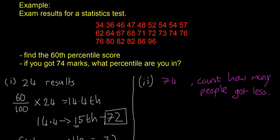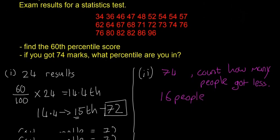So if you count how many people got less than 74, that's going to be 1, 2, 3, count all the way up, and you'll find that 16 people got less than 74. So that's 16 people got less. And the next thing we're going to do, I'll scroll down to make some more space.